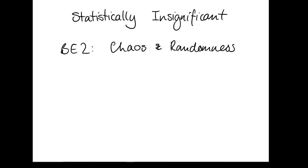We've talked about probability a whole bunch on the pod so far. Today we're going to talk about the actual justification for using it as a model for observations, given that at a large scale the physical world is pretty deterministic. To do that, we need to introduce two different sorts of system dynamics — how a system behaves over time. The first is a probabilistic, or random, system, and the second is a chaotic one. Mathematicians have a very specific meaning for chaotic behavior as opposed to random behavior, and that's what we're going to talk about today.